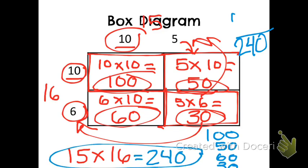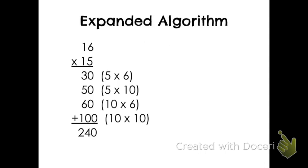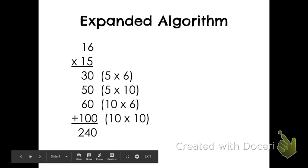I do like to see your final answer written similar to this right here, where I have my original two numbers before they were broken apart and the answer. Now, our box diagram actually relates to what we would do in expanded algorithm, which is what you see right here.